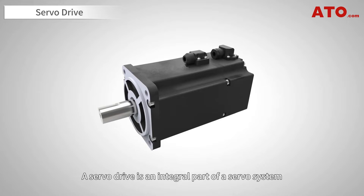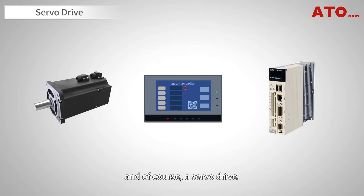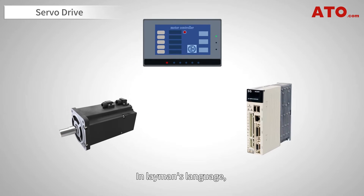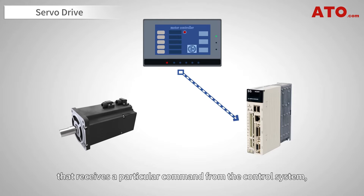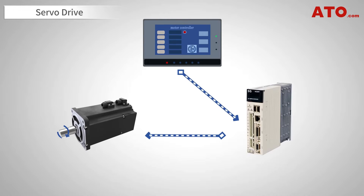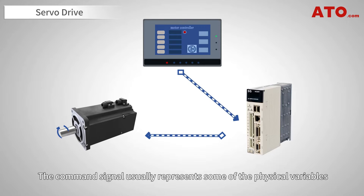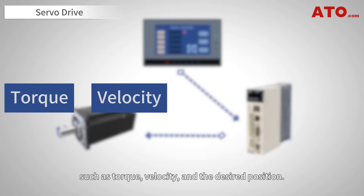A servo drive is an integral part of a servo system that consists of a motor, a controller, a feedback device, and a servo drive. In layman's language, a servo drive is a part of the servo system that receives a particular command from the control system, then amplifies it and transmits the current to a servo motor. The servo motor produces a motion tailored to the command it has received. The command signal usually represents physical variables such as torque, velocity, and the desired position.